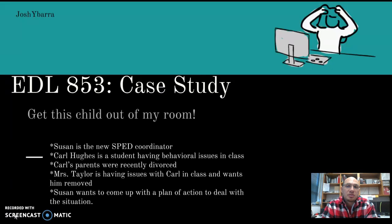Mrs. Taylor is the classroom teacher who wants Carl removed from class immediately. She is the one having the issues and has come to Susan about this. But Susan wants to work out a plan of action that doesn't require removing Carl from the classroom — she believes that's the last option, because it won't fix anything.